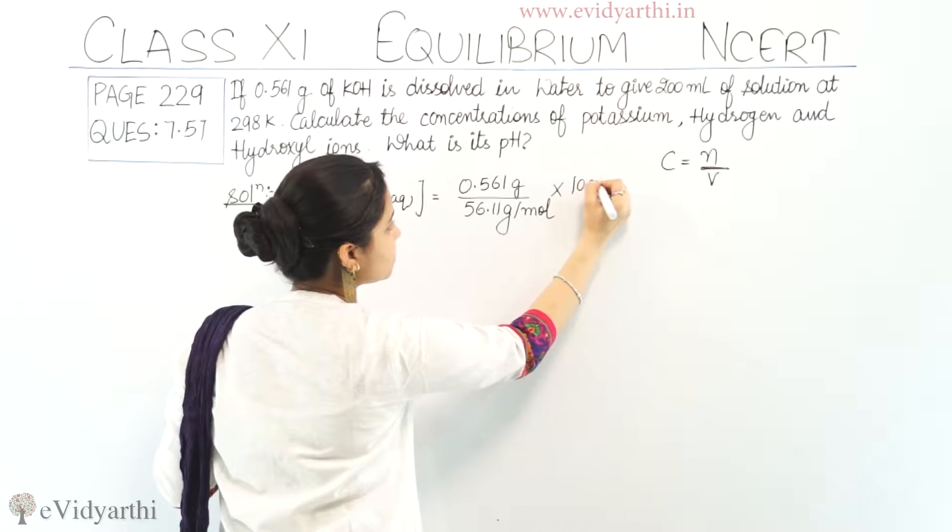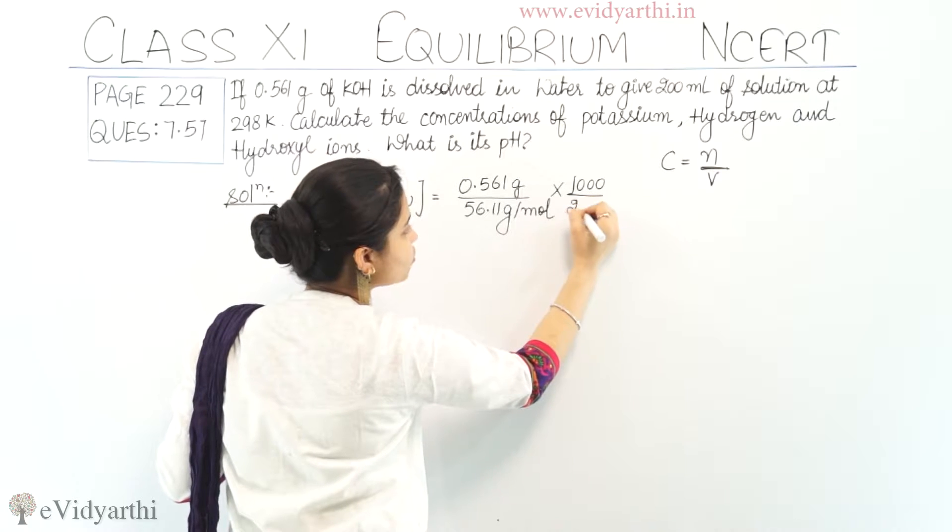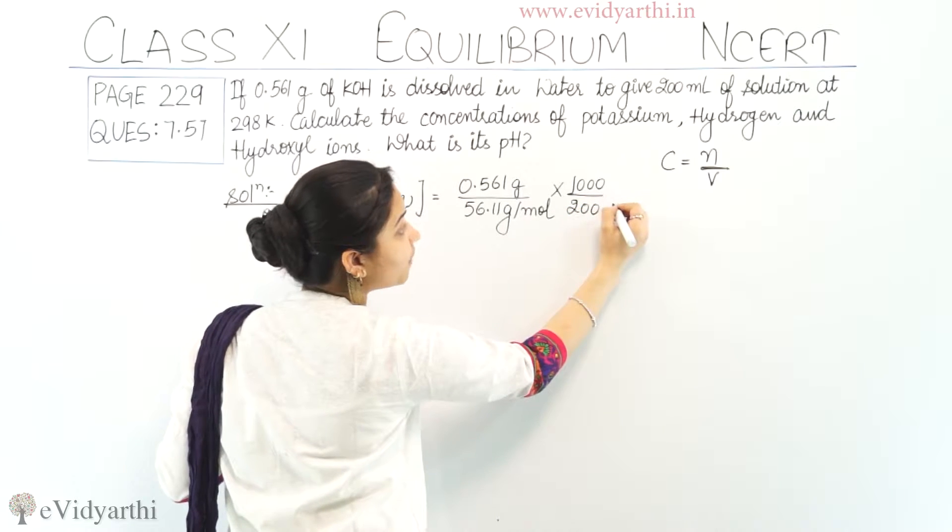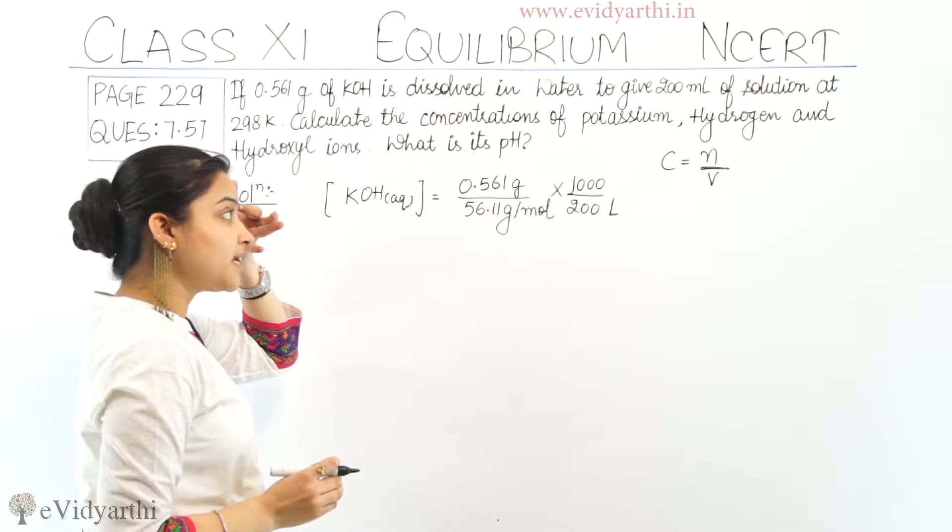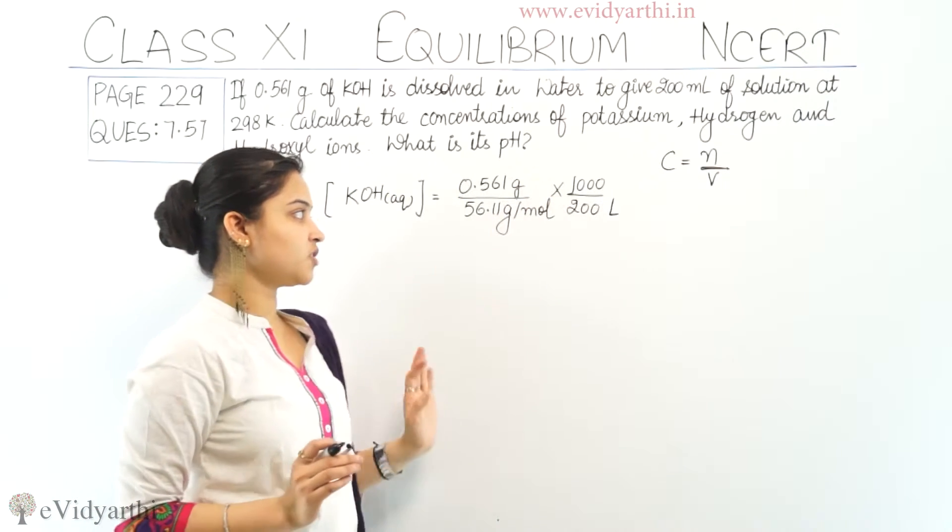Multiplied by 1000 divided by 200, it would be liter. 200 ml ko hum nai kis me change kar diya? Liter me change kar diya hai.